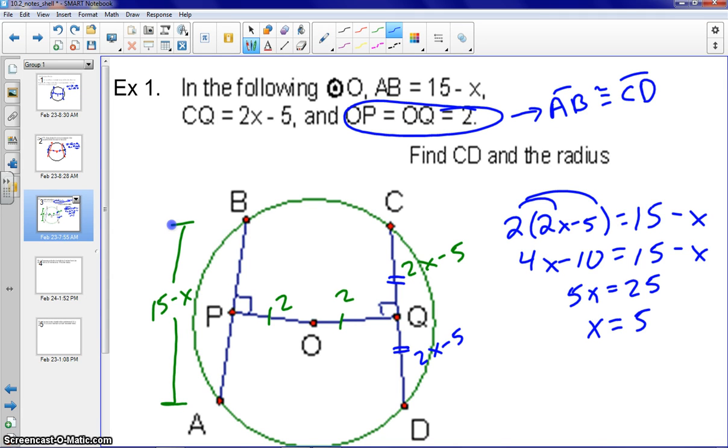And as always, as I talk about in class, please go back and read what are we actually looking for. Here we want to find CD. So in our case here, CD, so you could either plug it into the 2X minus 5 and 2X minus 5, multiply that by 2, or you could simply just plug it into the 15 minus X because that is what CD is also equal to, which is AB, chord AB. So 15 minus 5, so CD would be equal to 10.